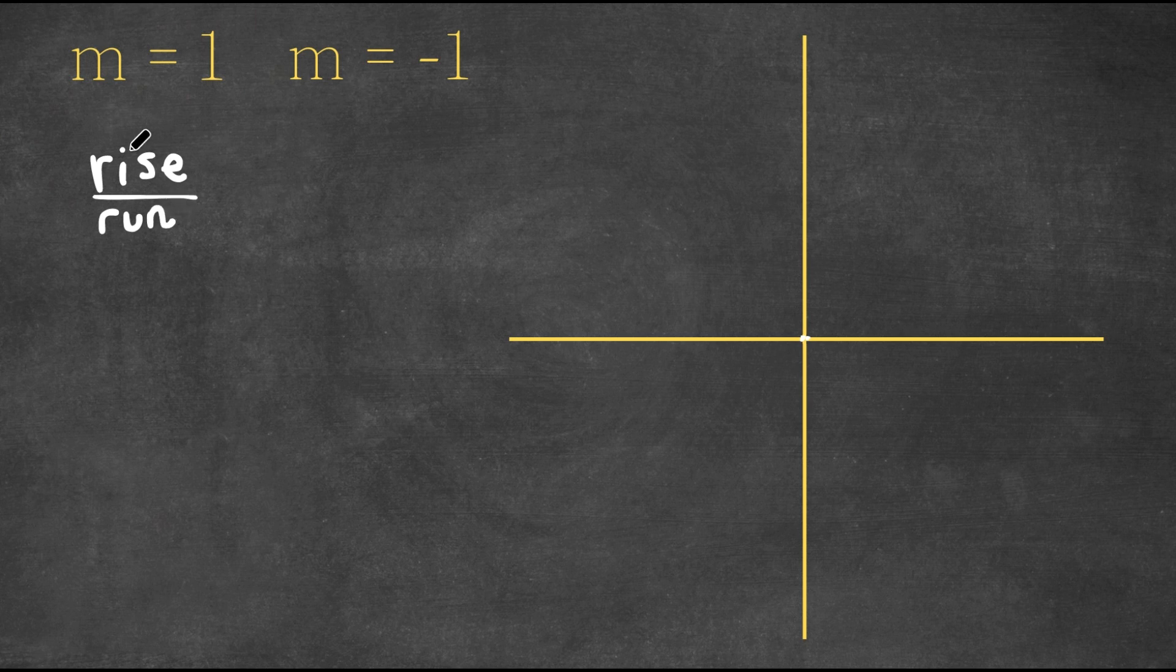The rise is how much you go up or down by, and the run is how much you go to the left or to the right by. Think about running - you go this way or this way, right? And rising is how much you go up or down by.